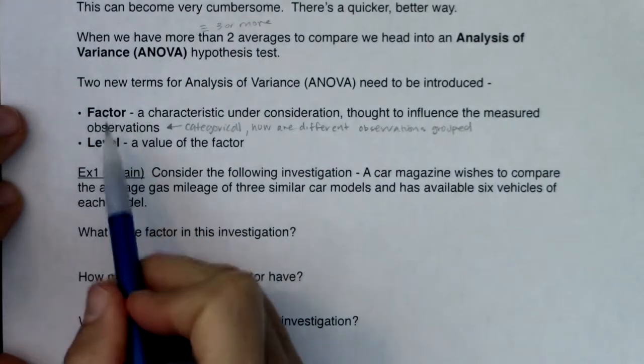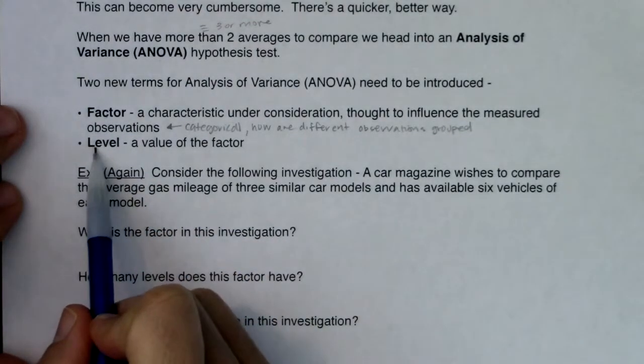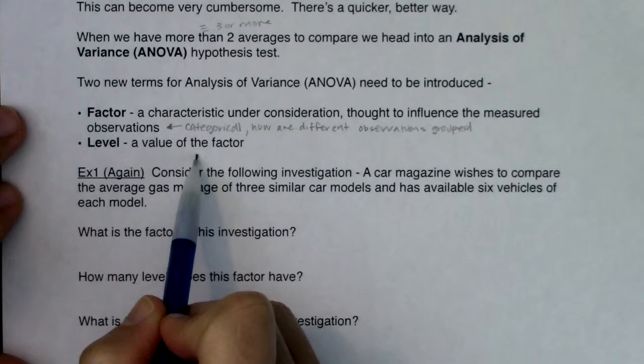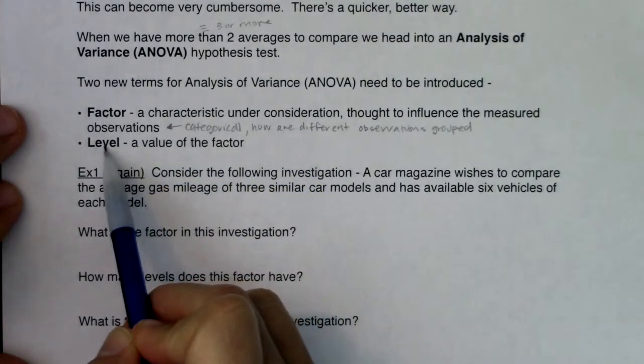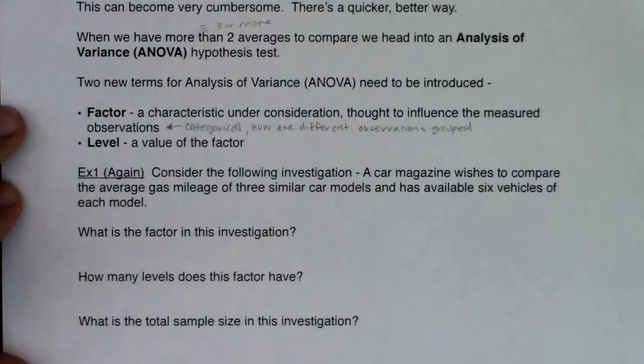So this will be a word. Now level will be a number. So level is the value of the factor, and when you hear level is the value of the factor, it just means how many groups did you have. So that's going to be the number that's associated with this.